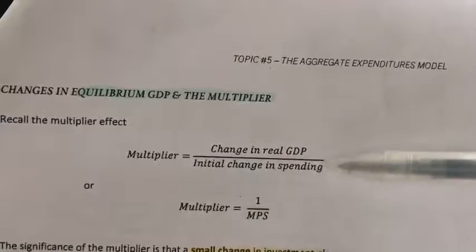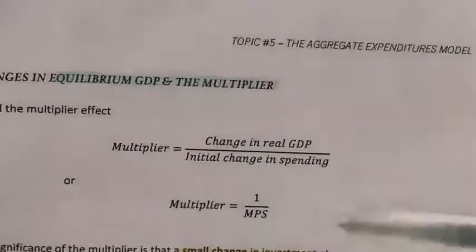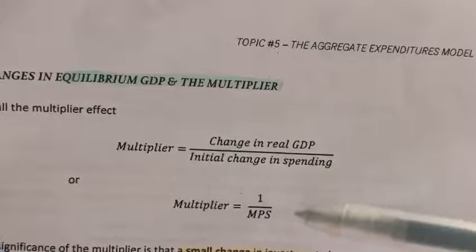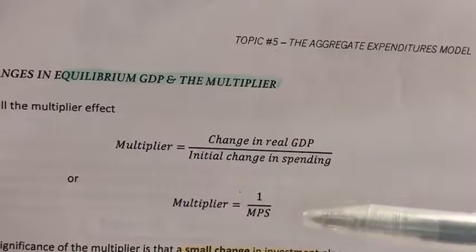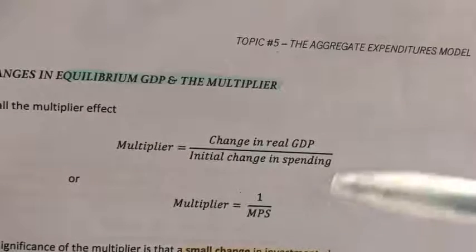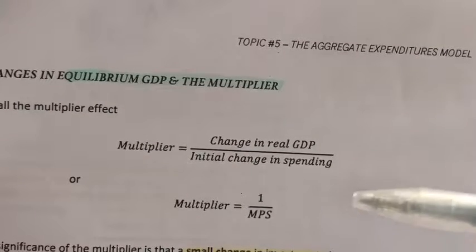So the initial change in spending here is either C or IG. Okay, let's look at this second formula, one over MPS. Now, you know that there is a relationship, right, between savings, consumption and income. C plus S equals to income.